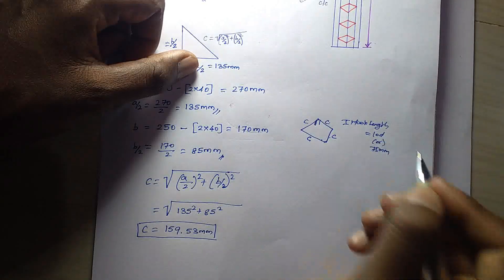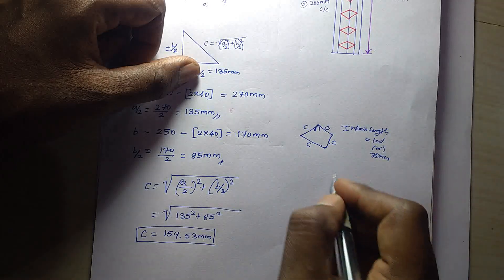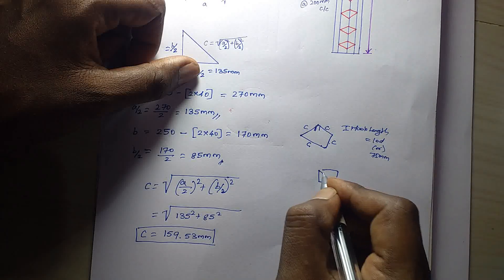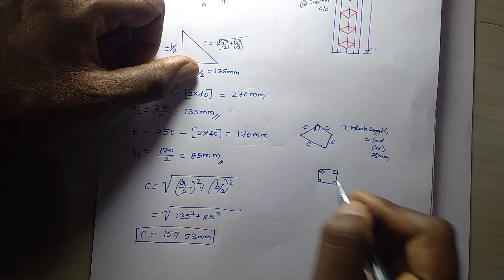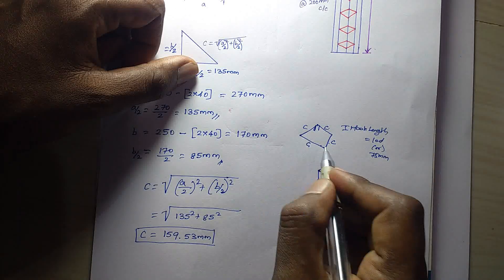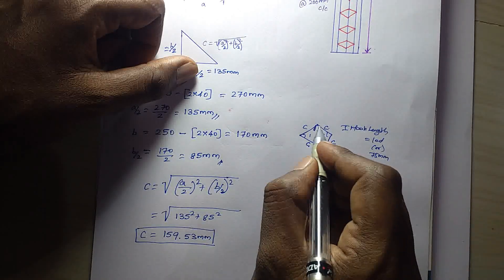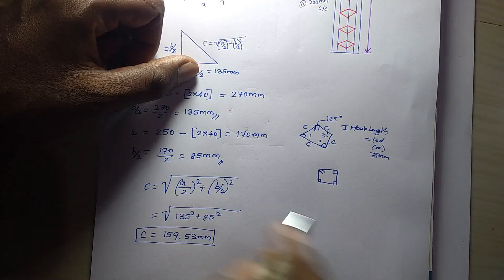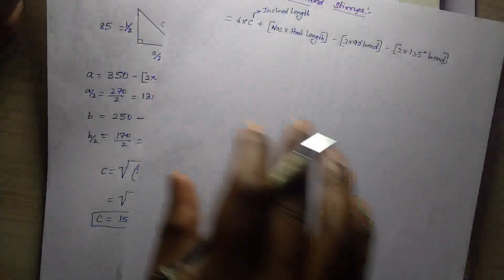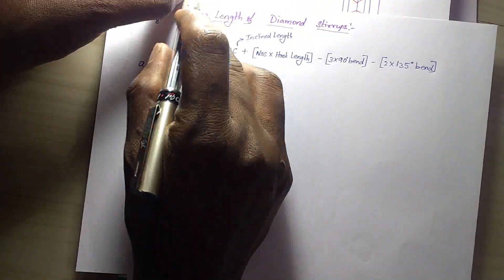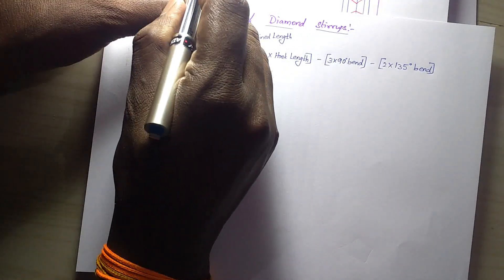Here you see: P8M dia bar, 10D, and bend out of the detection. Now bend in this area. If there is a bar or a rectangular bar, there is a rectangular strips. Bend in this area — 90 degree bend, 35 degree. Let's calculate. So now we have 4 sides — inclined length. So 4 times of inclined length plus hook length. How many hooks are there?